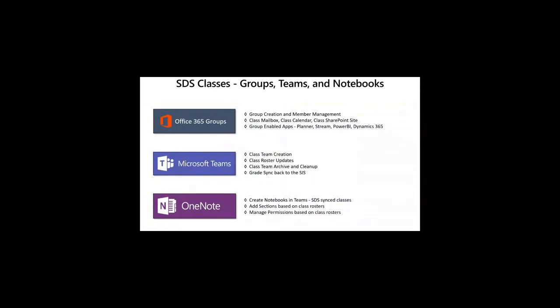The next thing is around classes. You can upload classes as CSV or pull across classes from your SIS via API connection, and there are really three primary use cases. Microsoft intends for the virtual classroom environment to live within Teams, so we model all of the classes that come in as a corresponding class Team. Then you can provision on top of that OneNote class notebook, which builds out sections for all of the students and teachers within your class. Underneath those Teams, you also have an Office 365 group, which ports to a variety of services across the Office stack — planner, stream, and other group-enabled applications — so building out classes as groups really empowers the entire ecosystem.